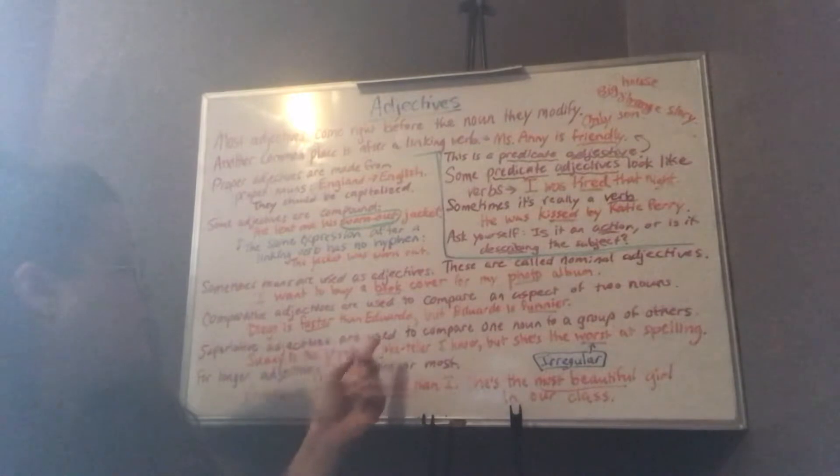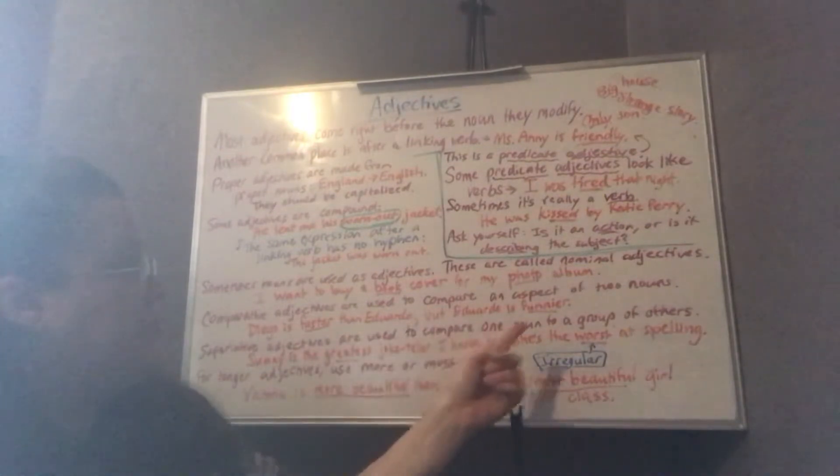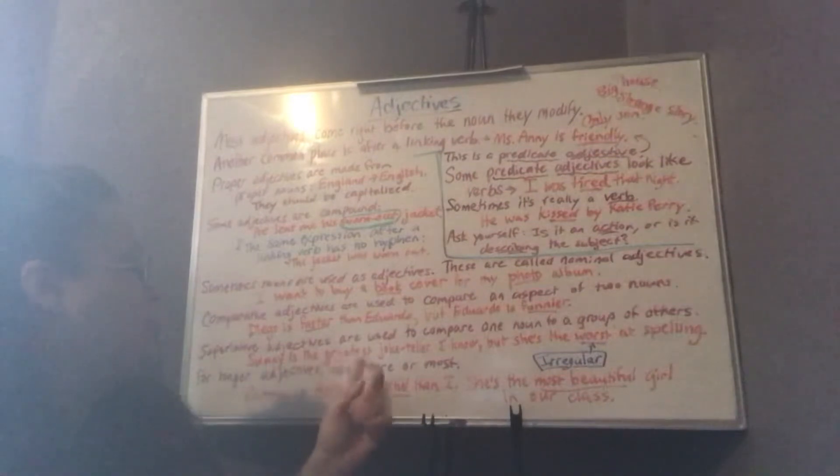Superlative adjectives are used to compare one noun to a group of others. For example, Suwani is the greatest joke teller I know, but she's the worst at spelling.